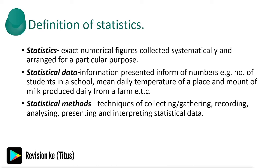Statistics is exact numerical figures collected systematically and arranged for a particular purpose. Statistical data is information presented in the form of numbers. Statistical methods are techniques of collecting, gathering, recording, analyzing, presenting, and interpreting statistical data. To define statistical methods we need to define statistics and statistical data, and before we can define statistical data we need to understand what statistics is about.